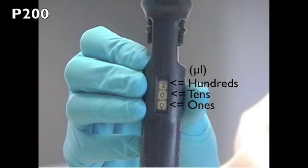On the P200, the first number displayed represents hundreds of microliters, the second number represents tens of microliters, and the third represents ones of microliters.